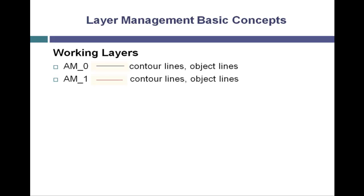AM underscore one is also a contour layer and uses a reddish brown color. Otherwise, it's the same as the AM underscore zero layer. This layer is available in case you would like to put object lines on a separate layer from AM underscore zero, perhaps for a different line weight or so you can control the visibility separately. There's a third object line layer, AM underscore two, and it uses a medium blue color but otherwise is identical to the other two.